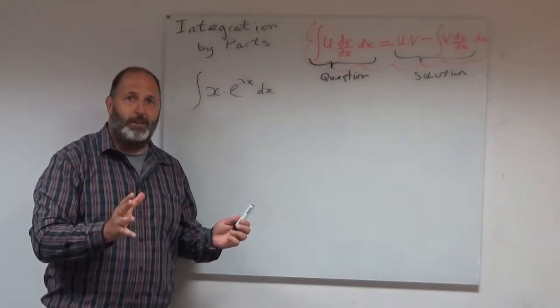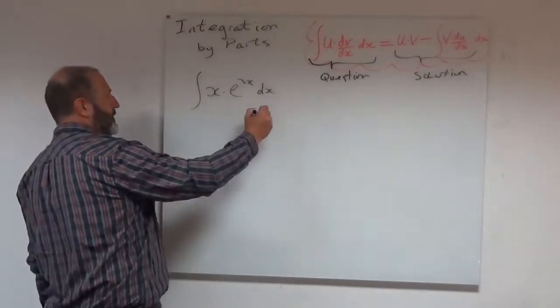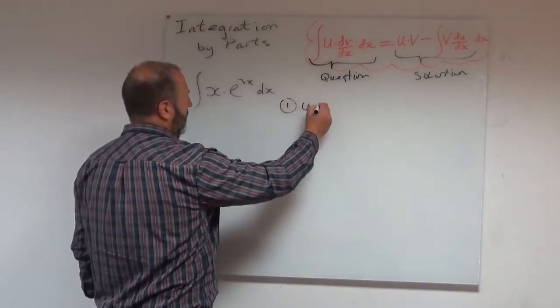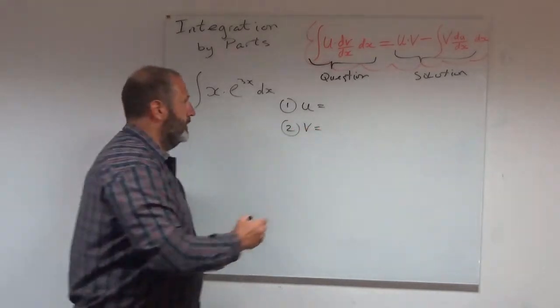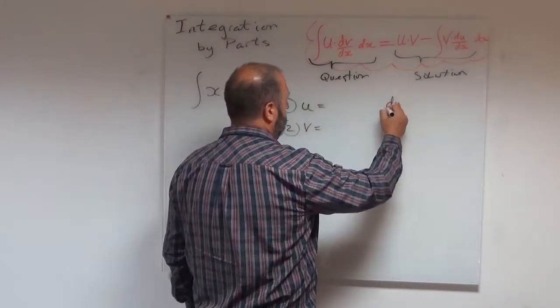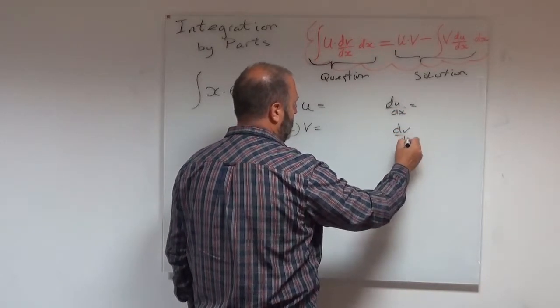I want to set a template out and that template hopefully is going to guide us through. So I'm going to say u equals, v equals, du dx equals, and dv dx equals.